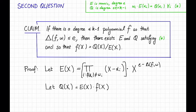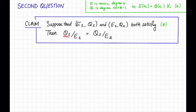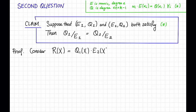We still haven't answered the second question yet though — we need another claim. Here's the other claim. Suppose that (E1, Q1) and (E2, Q2) both satisfy star. Then I claim that Q1 divided by E1 is the same as Q2 divided by E2. Let's prove this claim. Let's consider the polynomial r(x), which I'm going to define as Q1(x)·E2(x) minus Q2(x)·E1(x). We're going to show that this polynomial is identically zero.